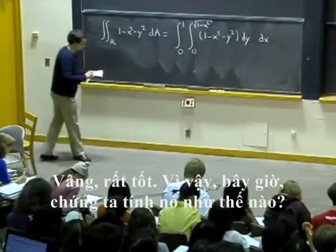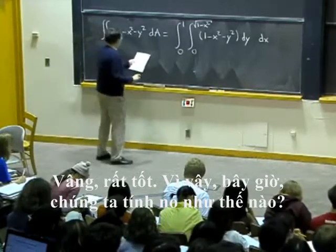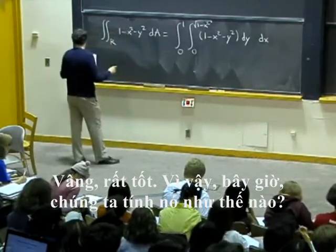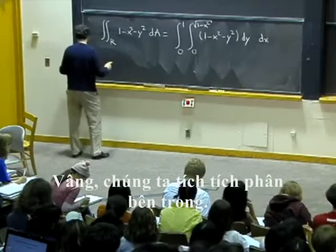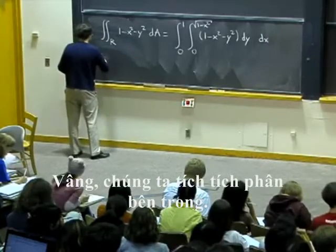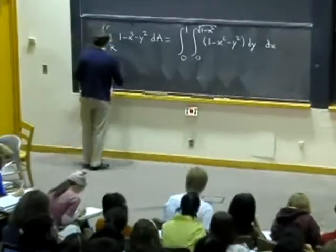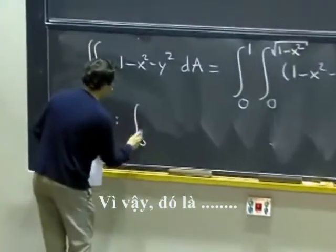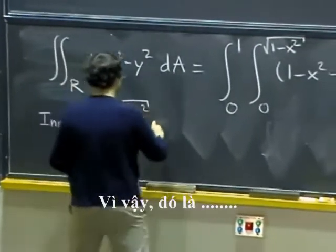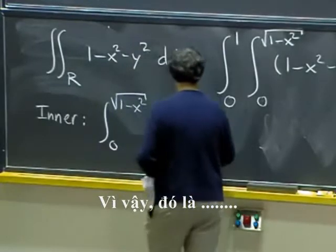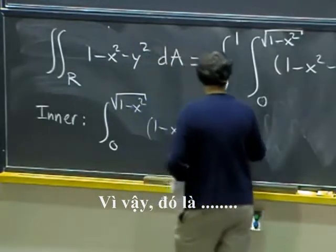OK, very good. So, now, how do we compute that? Well, we do the inner integral. So, that's integral from zero to square root of one minus x squared of one minus x squared minus y squared dy.